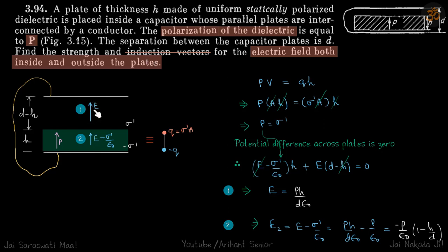Let's say the field between the plates is E and the bound charges are σ' and -σ'. Then the electric field inside the dielectric becomes E minus σ'/ε₀. We are not writing E/ε here because ε is not given in the problem — they either give ε or the polarization vector. Here they have given the polarization vector, so we need to find the field inside in terms of P. So inside field is E minus σ'/ε₀.